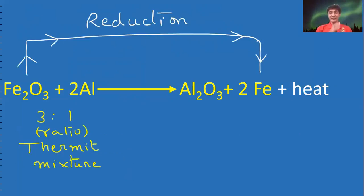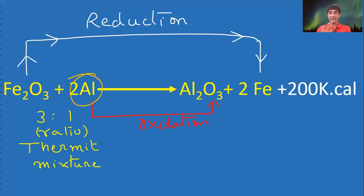Ferric oxide gets reduced. Ferric oxide changes into iron. Large amount of heat is released. Because of large amount of heat, that iron will be in the liquid state, molten state.